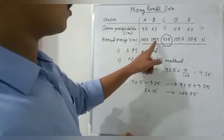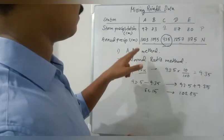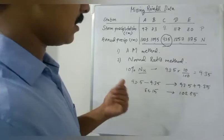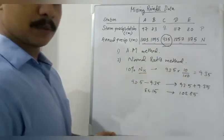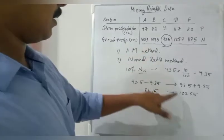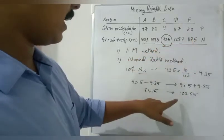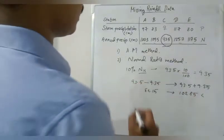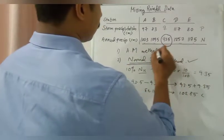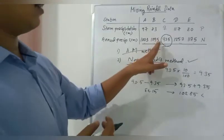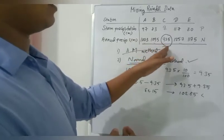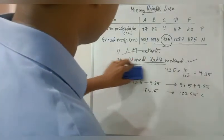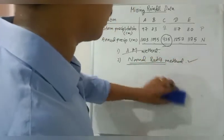So if all the other N values are in this range, you can adopt first method. If any of these N values are exceeding out of this range, you have to take second method, normal ratio method. It's as simple as that. Obviously there are three values already exceeding or greater than 102, that is the upper limit 102.85. So obviously we are taking normal ratio method because there are three values that are exceeding more than 10 percentage of Nx value.